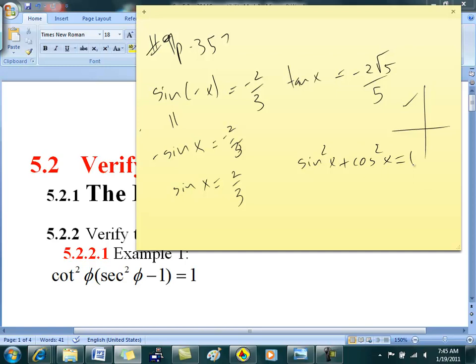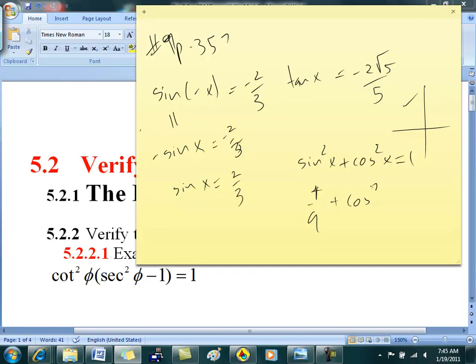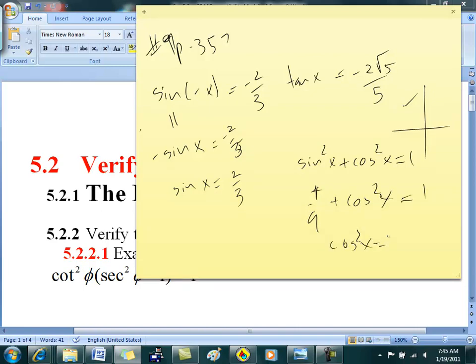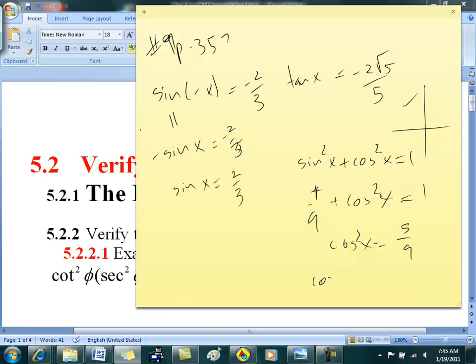Do I know sine x? Yeah. What's sine squared? What's sine squared? 4 over 9. 4 over 9 plus cosine squared x equals 1. So what's cosine squared x? 5 over 9. So what's cosine x?